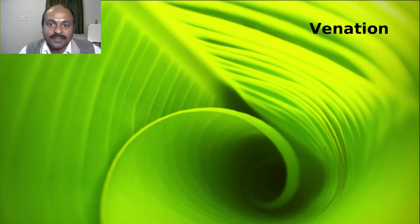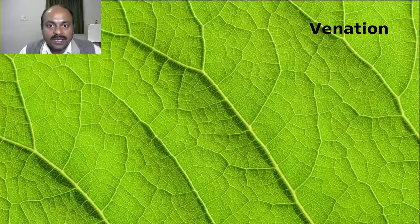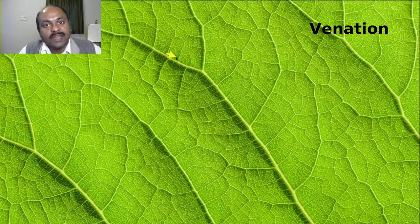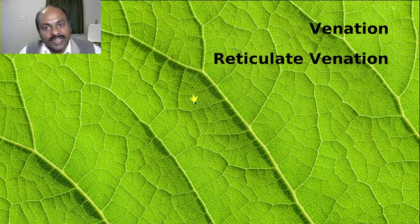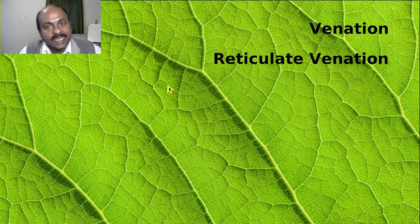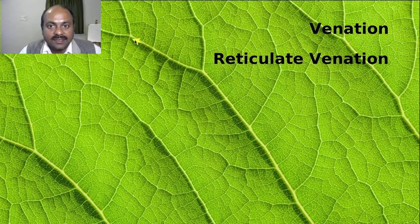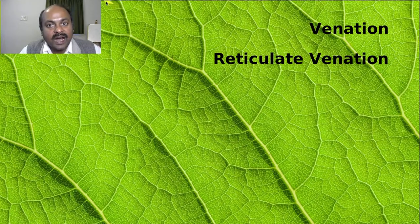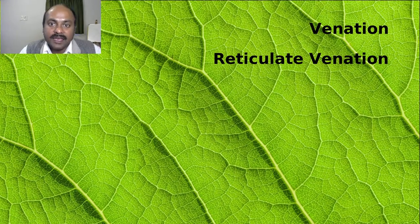There are two types of venation. The one we are most familiar with, in which the veins form a net-like pattern, is known as reticulate venation. In this, the veins are interconnected with each other, just like the strands of a net. Examples of reticulate venation are the mango leaf, chiku, and hibiscus.